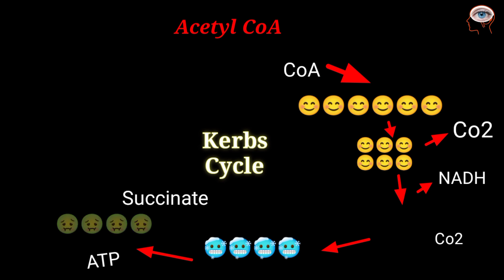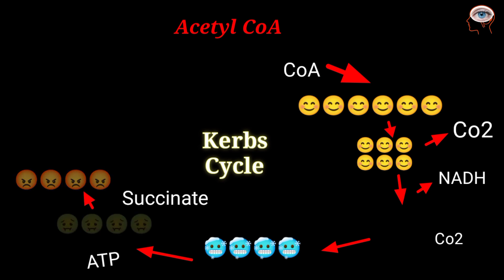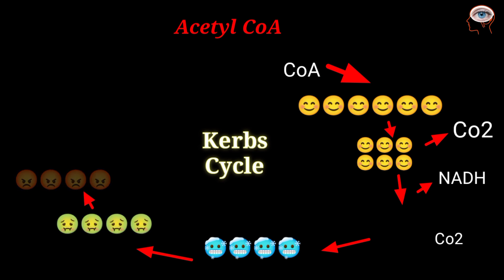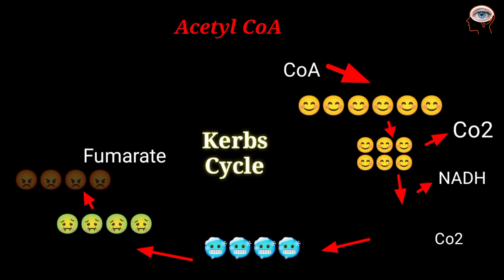In the sixth step, succinate is oxidized and forms fumarate, which is also a 4-carbon compound. During this step, FAD is reduced to FADH₂.